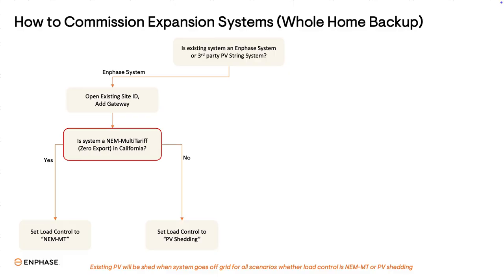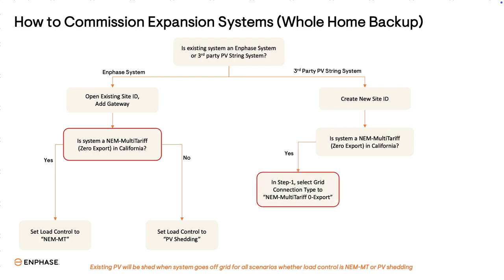Going back to the top of the decision tree: if the system is a third-party PV string system, you will create a new Site ID in the installer app. Then determine if it's a NEM multi-tariff system in California. If yes, set the grid connection type to NEM multi-tariff zero export in step 1, then set load control to NEM MT. If the system is outside California and it's not a NEM multi-tariff system, set the load control to PV shedding. Please note, existing PV will be shed when the system goes off-grid for all scenarios, whether load control is set to NEM MT or PV shedding. The difference is for NEM MT: in addition to PV being shed, the new system is zero export and the existing PV doesn't charge batteries.